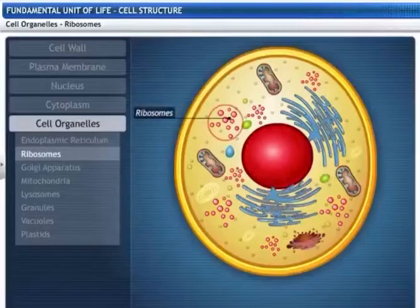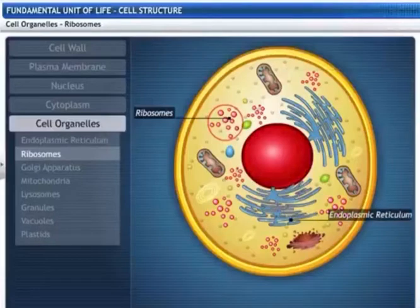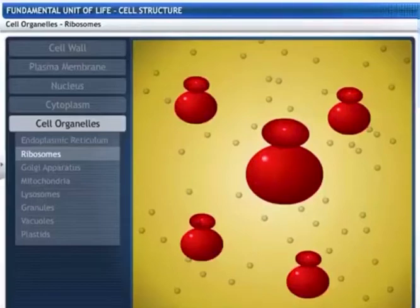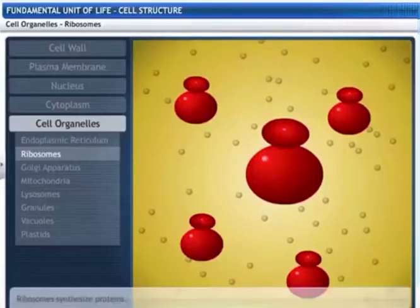These are ribosomes found scattered in the cytoplasm, or attached to the outside of the endoplasmic reticulum. These are naked and have no membrane. Ribosomes synthesize proteins.